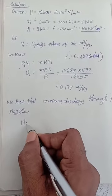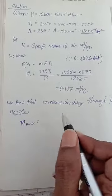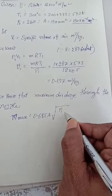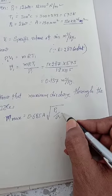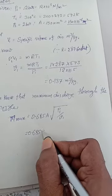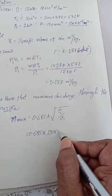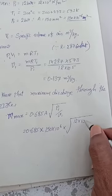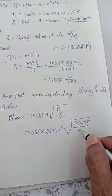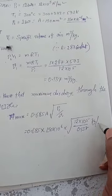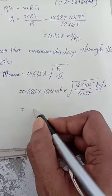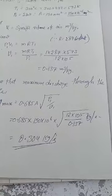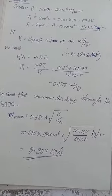The maximum discharge through the nozzle: m_maximum is equal to 0.685 × A × √(p1/v1). Now substitute values: area A is equal to 150 × 10 to the power of minus 6 meter square, and substitute the values of p1 and v1. Solving this equation gives the maximum discharge of the nozzle in kg per second.